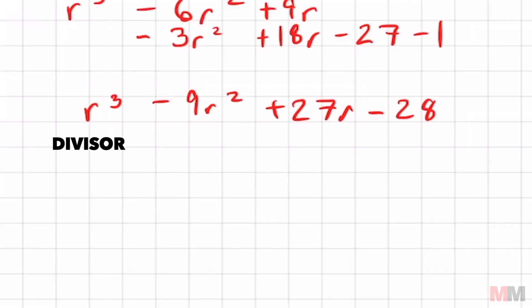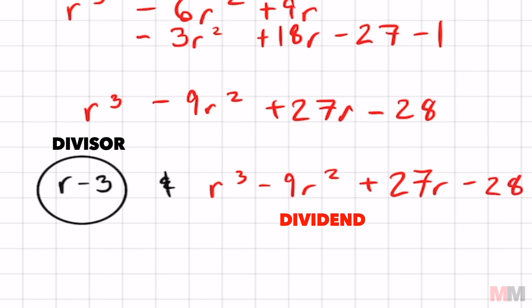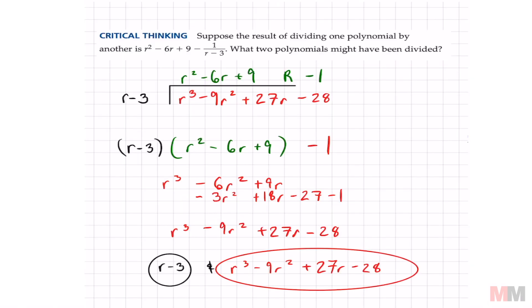So my two answers are r minus 3 and r cubed minus 9r squared plus 27r minus 28. That's a really good question. Hope it helped. Like and subscribe, and I'll see you on the next episode. Peace.